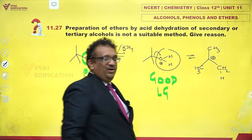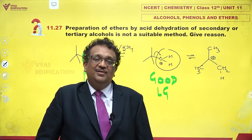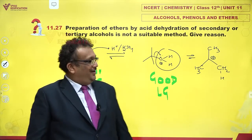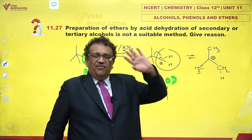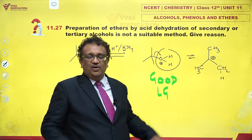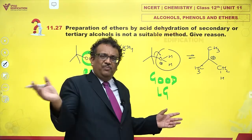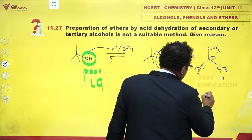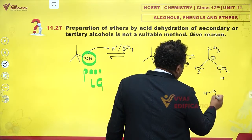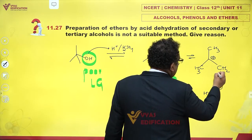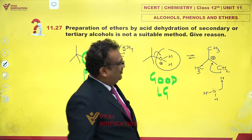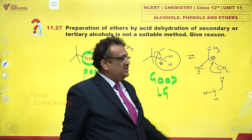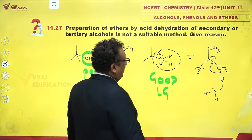Carbocations have a great tendency to lose H⁺. Very naturally, just like dry leaves on a tree with a small breeze just fall away, in the same fashion, this H⁺ is just dying to leave. Carbocations have a great tendency to push away H⁺ and form alkenes.